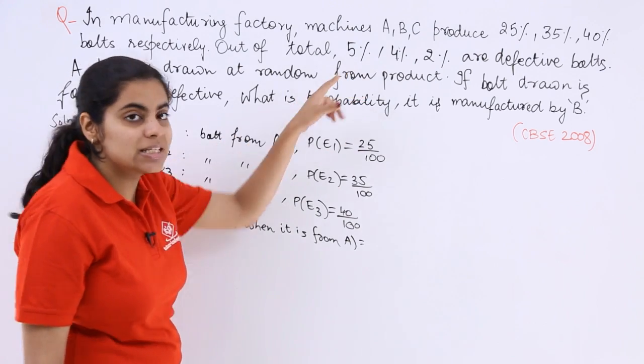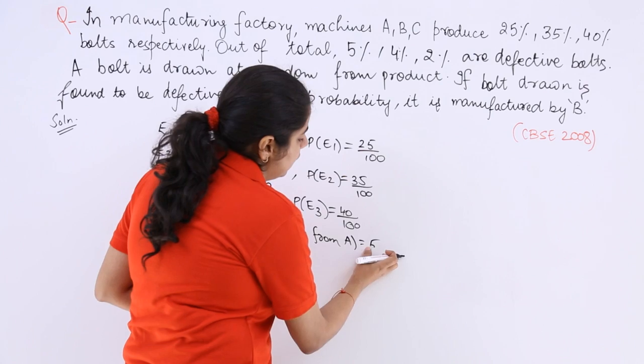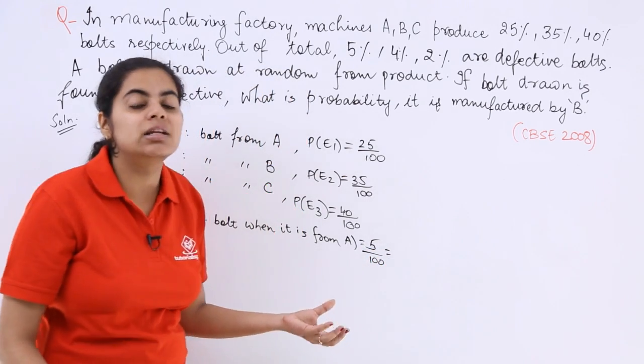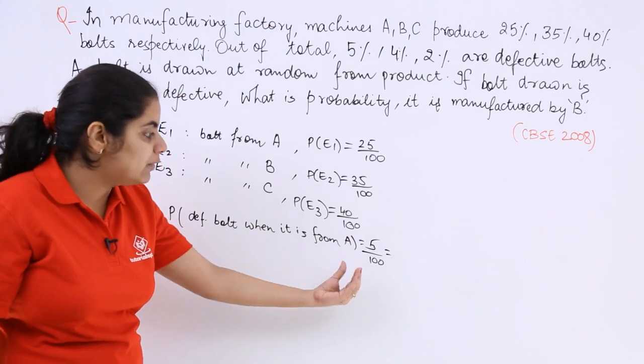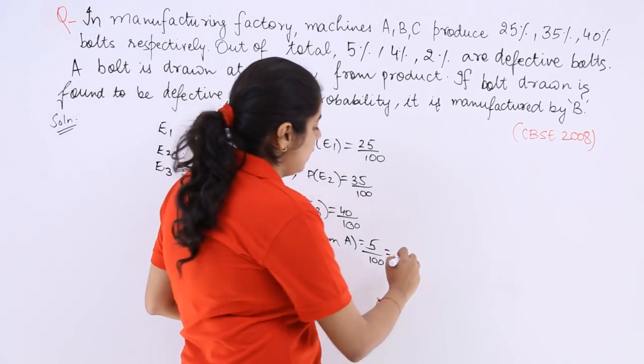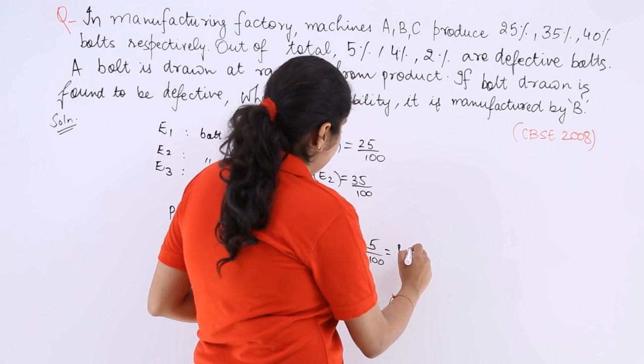Probability of defective bolt when it is from machine A is 5%, which is 5 over 100. So this is what it is in mathematical terms. You see defective bolt when it is from A, so it has been known that it is from A and it is defective.